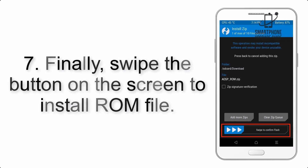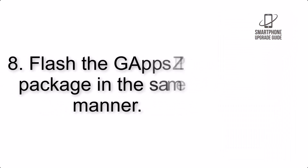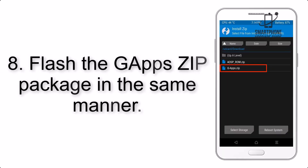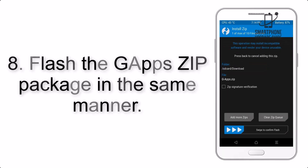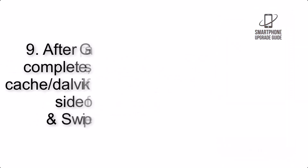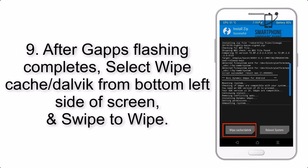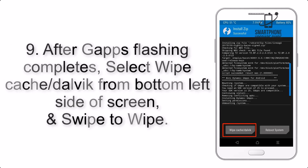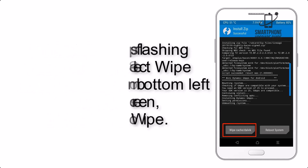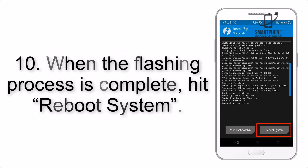Step 7: Swipe the button on the screen to install the ROM file. Step 8: Flash the GApps zip package in the same manner. Step 9: After GApps flashing completes, select Wipe Cache and Dalvik from the bottom left side of the screen and swipe to wipe.